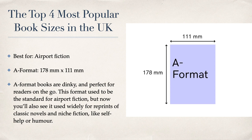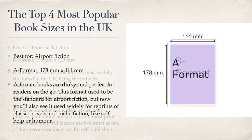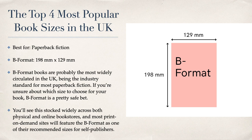The four most popular book sizes in the UK are slightly different and are measured in millimeters. A format - airport fiction - is 178 by 111 millimeters. They're dinky and perfect for readers on the go. This format used to be the standard for airport fiction but is now widely used for reprints of classic novels and niche fiction. B format comes as a preset in Affinity Publisher - it's best for paperback fiction and is probably the most widely circulated in the UK, being the industry standard. If you're unsure which size to choose and you're in the UK or Europe, B format is a pretty safe bet.